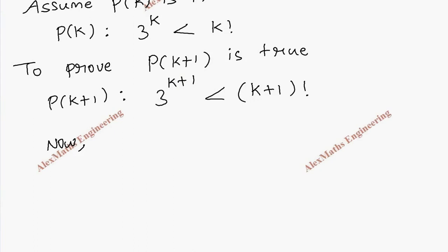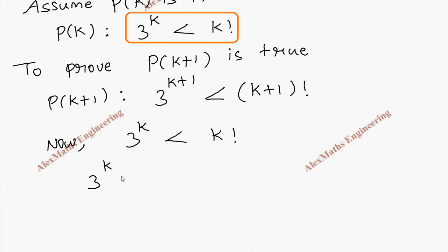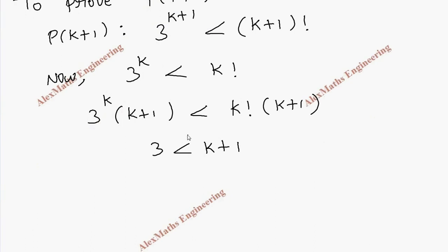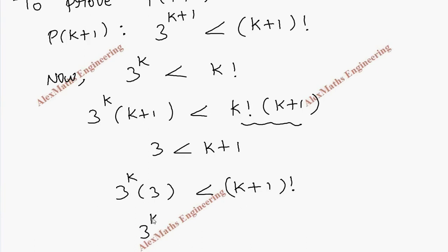For proving this, we take the expression from P of k: 3 power k is less than k factorial. Now I am going to multiply k plus 1 on both sides. Since we multiply the same value on both sides, this inequality is not affected. Also, we know 3 is less than k plus 1 because the value of k starts from 7 onwards, so this is always true. When I replace k plus 1 with the lesser value 3, again this inequality is not affected, and k factorial into k plus 1 becomes k plus 1 factorial. Adding the powers gives us 3 power k plus 1 is less than k plus 1 factorial.